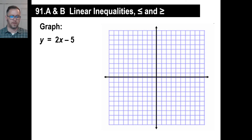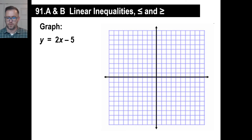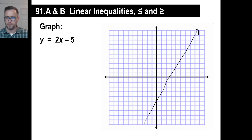Let's graph y equals 2x minus 5. You know what that is. You immediately can count 1, 2, 3, 4, 5 — that's your y-intercept. The slope is 2, so 2 over 1, 2 up. And it's positive 2, so you go up and over like this. And there's your line.